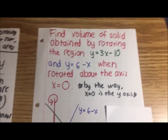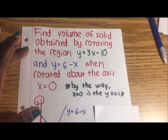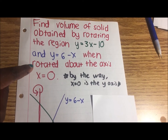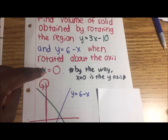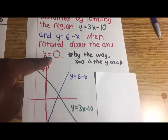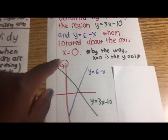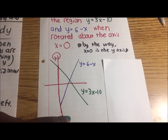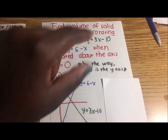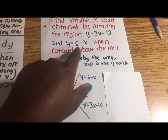Here's the third and final example. Find the volume of the solid obtained by rotating the region bounded by y equals 3x plus 10 and y equals 6 minus x, rotated about the axis x equals 0. Note that x equals 0 is the y-axis.